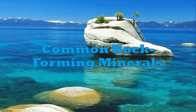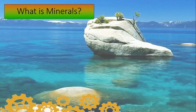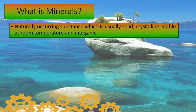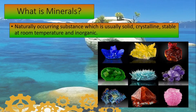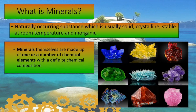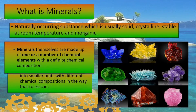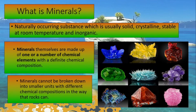Common Rock-Forming Minerals. Minerals are naturally occurring substances which are usually solid, crystalline, stable at room temperature, and inorganic. Minerals themselves are made up of one or a number of chemical elements with a definite chemical composition. Minerals cannot be broken down into smaller units with different chemical compositions in the way that rocks can.